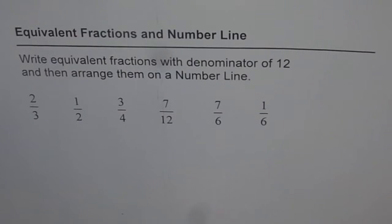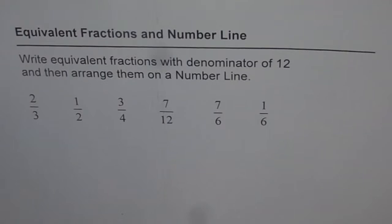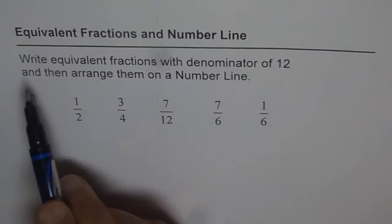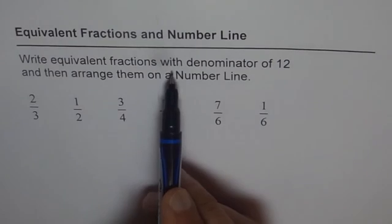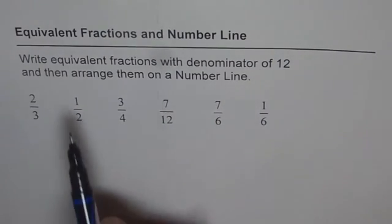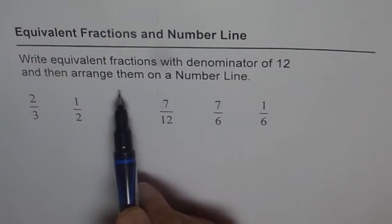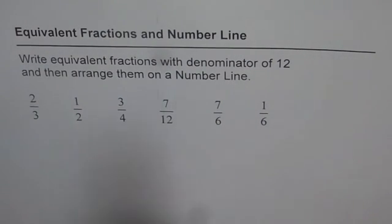Equal fractions and number line. We will try to see how to arrange numbers from least to greatest and how to convert them to a common denominator. The question here is: write equivalent fractions with a denominator of 12, and then arrange them on a number line.